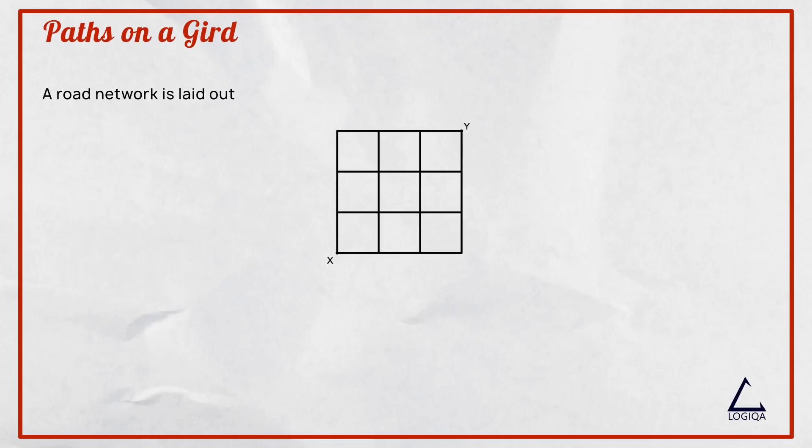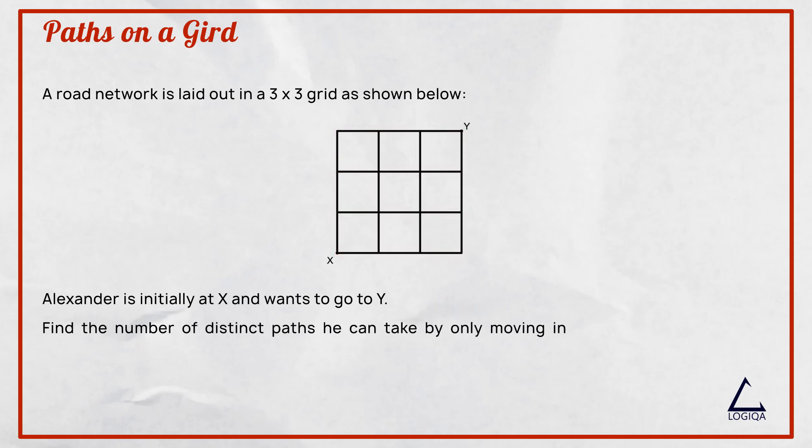A road network is laid out in a 3x3 grid as shown below. Alexander is initially at X and wants to go to Y. Find the number of distinct paths he can take by only moving in a rightwards or upwards direction.